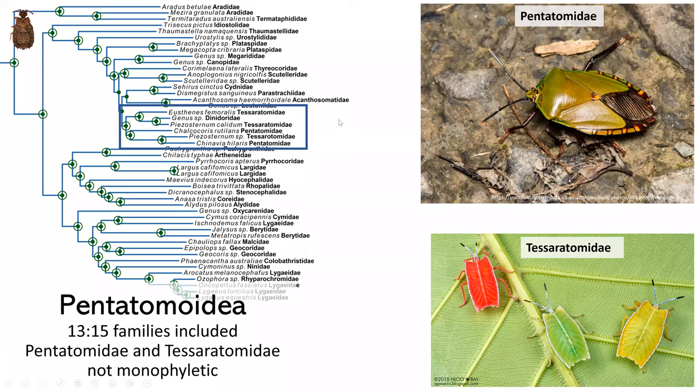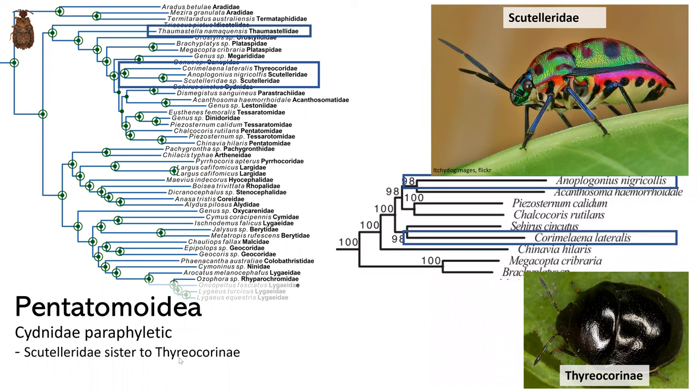We also found that Cydnidae is paraphyletic. The subfamily Thyreocorinae is sister to Scutellaridae, which you can see in that blue box.